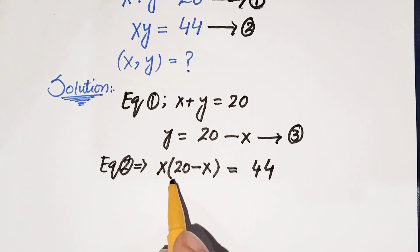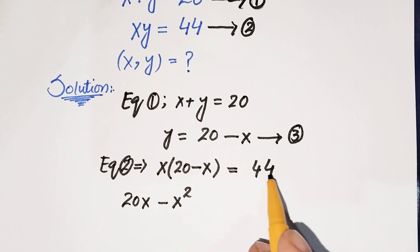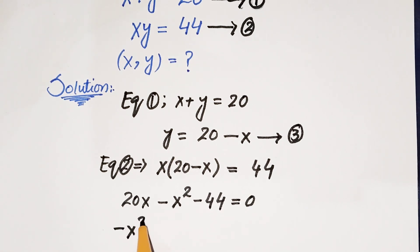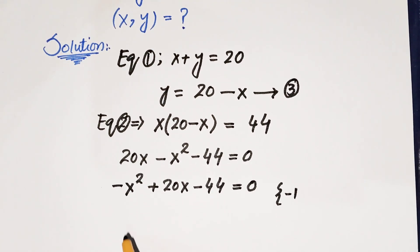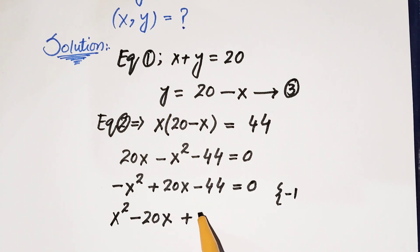Multiplying x with 20 we get 20x, and minus x times x is x squared. Shifting 44 across we get minus x squared plus 20x minus 44 is equal to 0. Multiplying through by minus 1 gives us x squared minus 20x plus 44 equals 0.